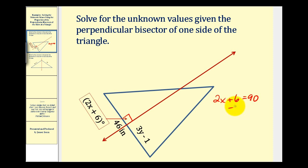So we'll subtract 6 on both sides. This would be 0. 90 minus 6 would be 84. Divide both sides by 2 so we know x has to equal 41.